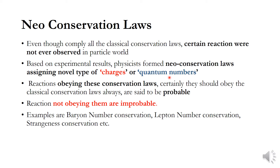Based on these quantum numbers, we can predict whether a reaction will occur or not. Reactions obeying these neo-conservation laws are said to be probable — though they must certainly also obey the classical conservation laws. Reactions that do not obey these neo-conservation laws are improbable. Some examples of these laws are baryon number conservation, lepton number conservation, strangeness conservation, and so on.